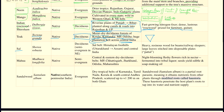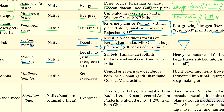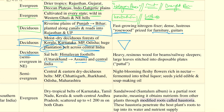Coming to the Sal tree, called Shorea robusta, it is a native species, mostly a deciduous tree confined to the northern part of our country — that is, the Himalayan foothills from Uttarakhand to Assam — and also some parts of central India. Its leaves are mostly made into disposable plates. This tree is a very important non-timber forest product and a source of livelihood for tribal communities.